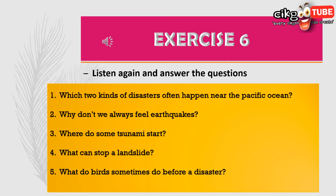Sometimes one disaster can cause another. For example, a tsunami sometimes happens after there is an earthquake in the middle of the sea, and a wildfire on a mountain can sometimes cause a landslide. Trees can stop landslides happening because they help keep the earth in place. But when there aren't any trees, the earth can move more easily and come crashing down onto a town or city.